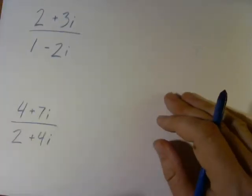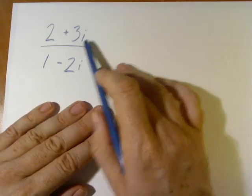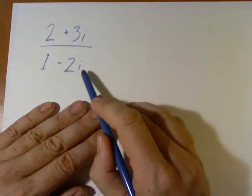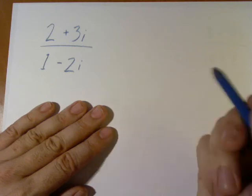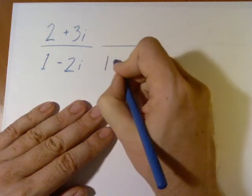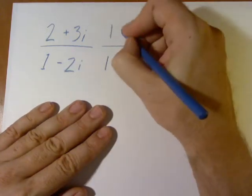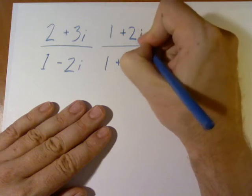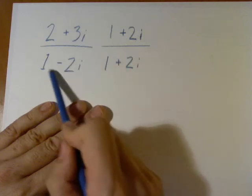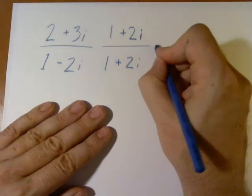Okay, first example. We have 2 plus 3i divided by 1 minus 2i. How can we simplify this? Well, we're going to multiply this times the complex conjugate of the denominator. Now, notice that any number divided by itself is 1, so we take the complex conjugate of the denominator over itself. Well, let's see what that gives us.